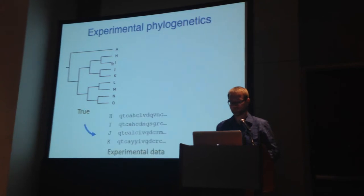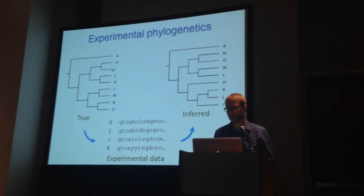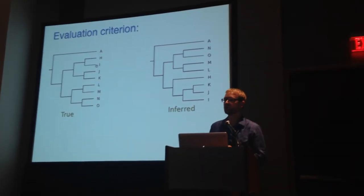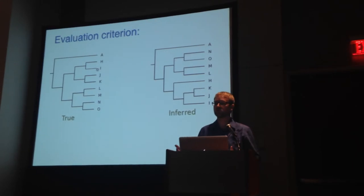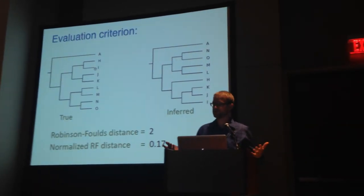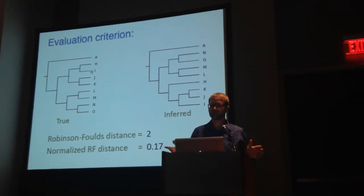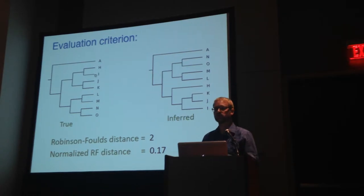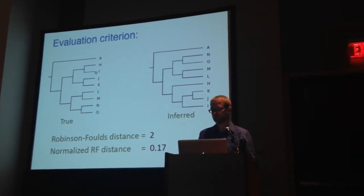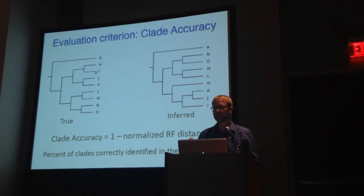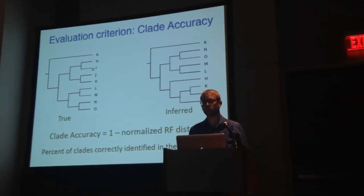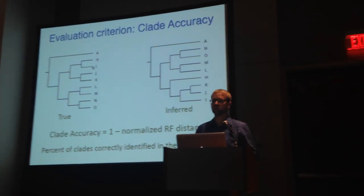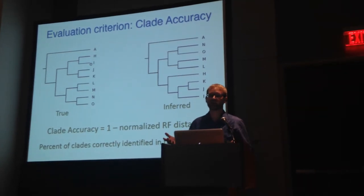So we evolved a known evolutionary history, sampled at the very end, and then inferred trees using MrBayes and RAxML. We needed a criterion to evaluate the accuracy of our inferred trees relative to the true tree, and we used the Robinson-Foulds distance measure. We normalized this by the maximal Robinson-Foulds distance for this number of taxa — here it's just 0.17. We then used clade accuracy, which is just one minus that number. This is directly interpretable as the percent of clades reconstructed accurately.